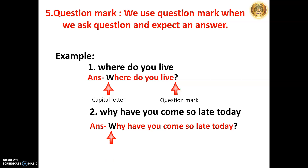The second question example: 'Why have you come so late today?' This is a complete sentence. We read the sentence and find out what punctuation to use. 'Why' is the start of the sentence, so W will be a capital letter. And since 'Why have you come so late today?' is a question, at the end we put a question mark.